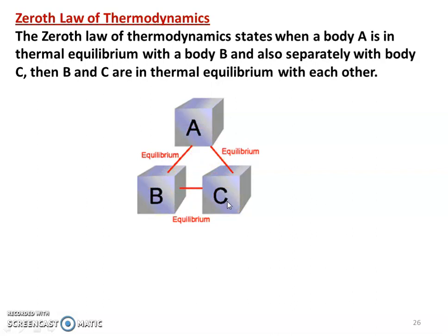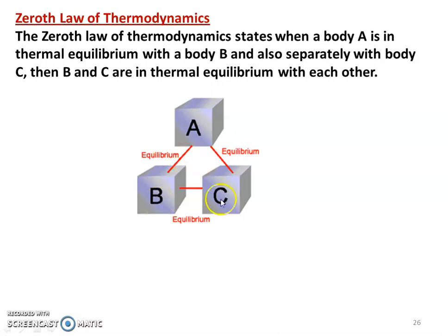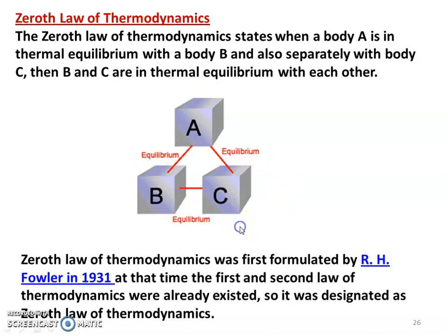Then, independently and separately, B and C are in thermal equilibrium with each other. So: temperature of A equals temperature of B, temperature of A equals temperature of C, therefore temperature of B equals temperature of C. That is the zeroth law of thermodynamics — when body A is in thermal equilibrium with body B and body C separately, then B and C are also in thermal equilibrium with each other. This is an important law in thermodynamics.